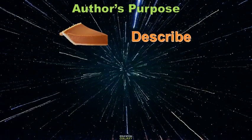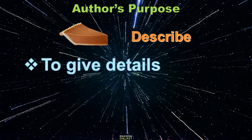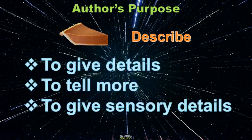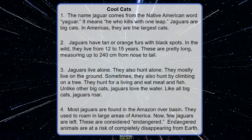Yet another purpose is to describe. The author gives details to tell more about something, and also gives sensory details about the sight, smell, sound, touch, feel, etc. Like this one, which is about the details about jaguars. Look at this example — it describes how they look, how tall they are, where they are found. It gives you details about the jaguars.